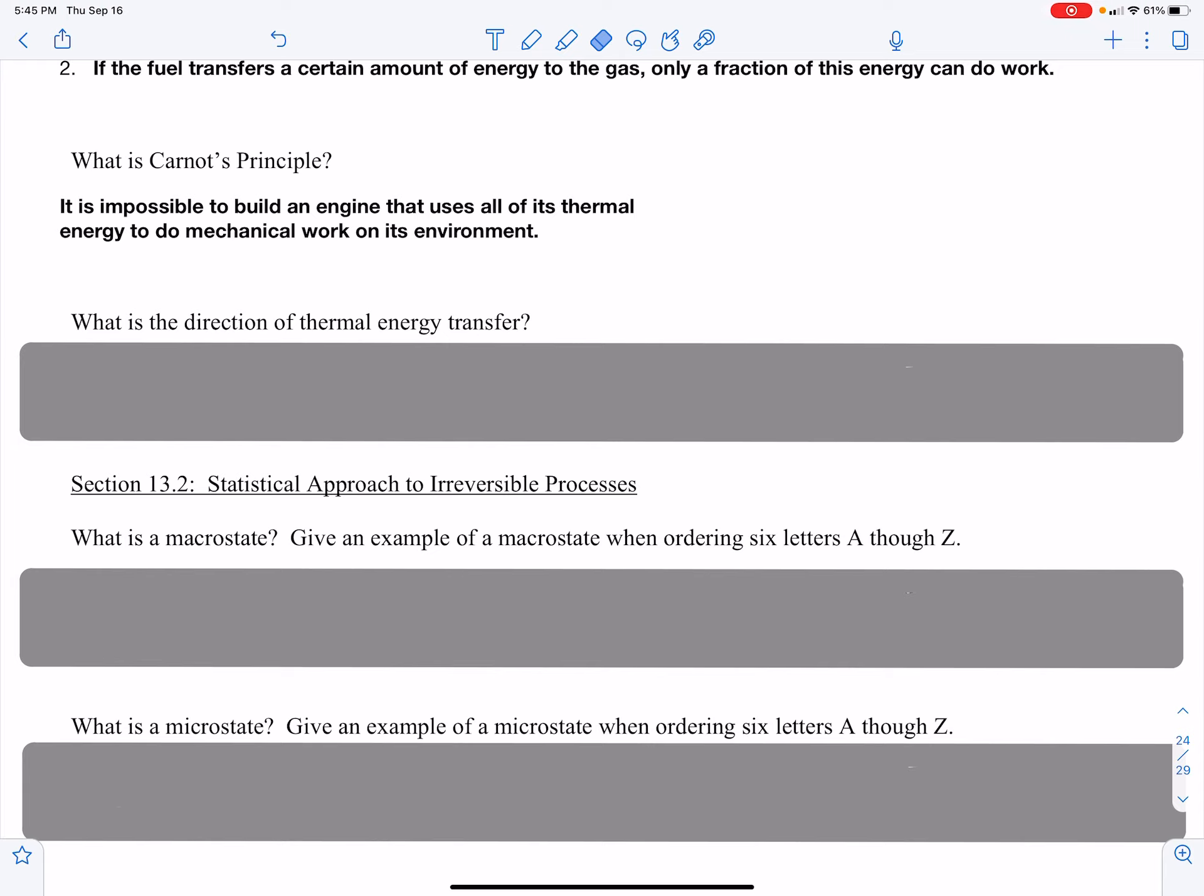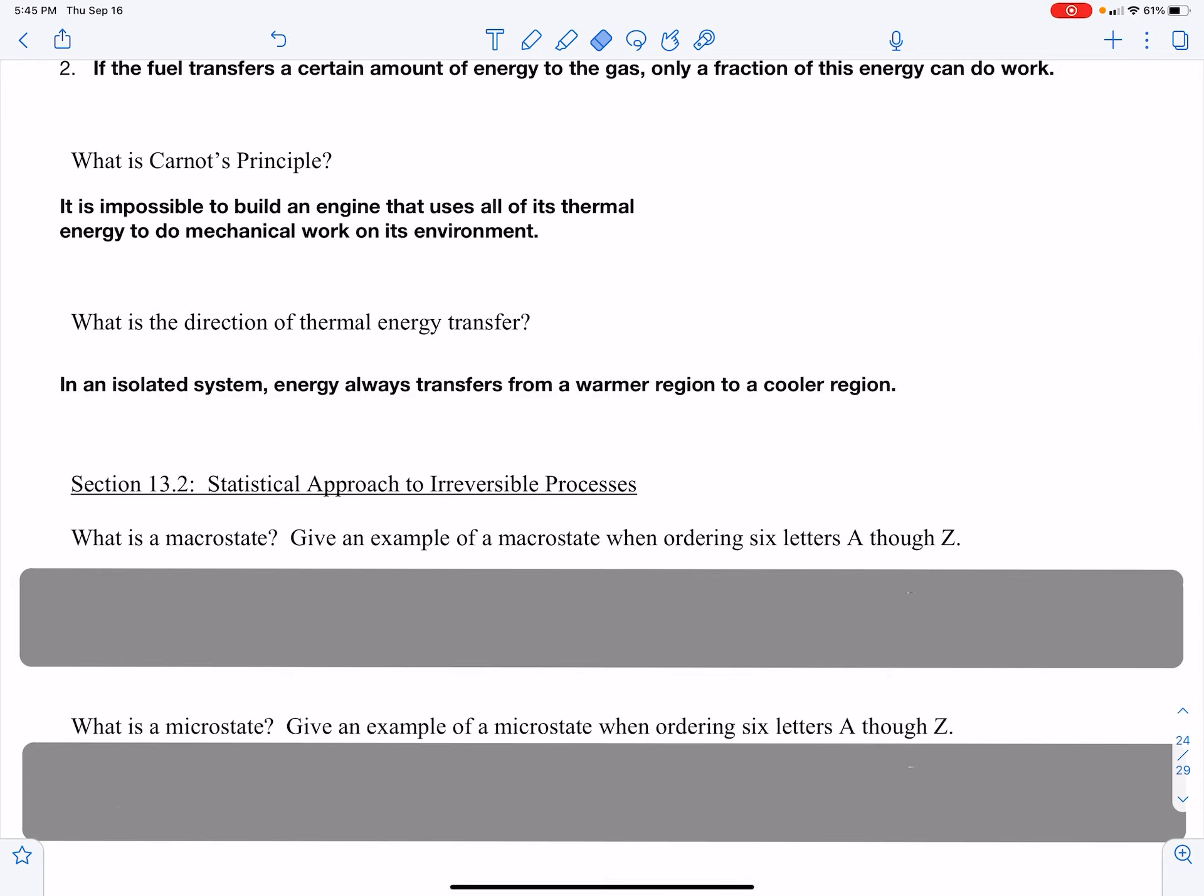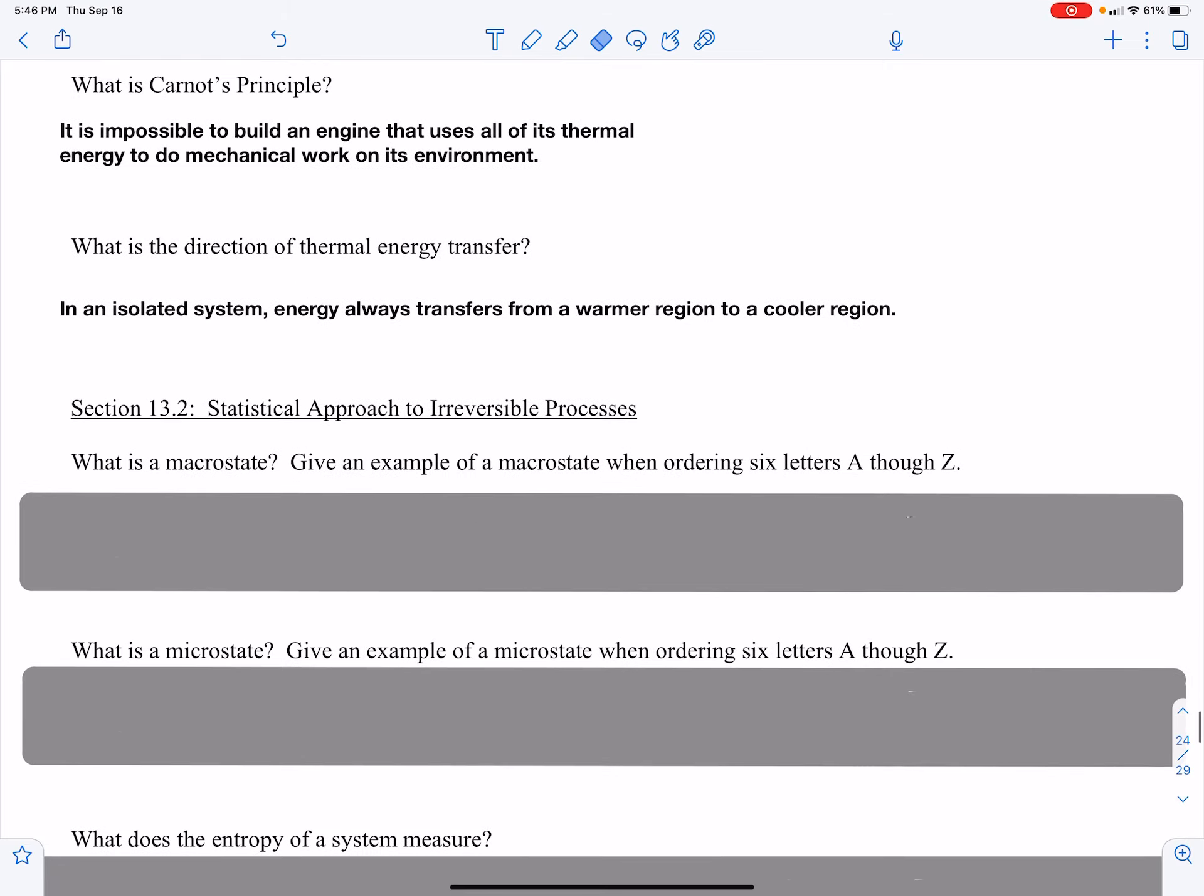What is the direction of thermal energy transfer? Well, in an isolated system, energy always transfers from a warmer region to a cooler region. Again, this is another statement of the second law of thermodynamics. The second law is basically a way of stating how natural processes occur, and you can come up with several examples that fit.